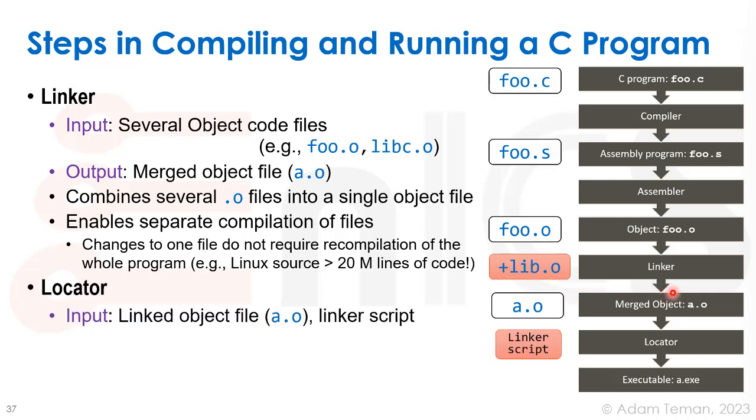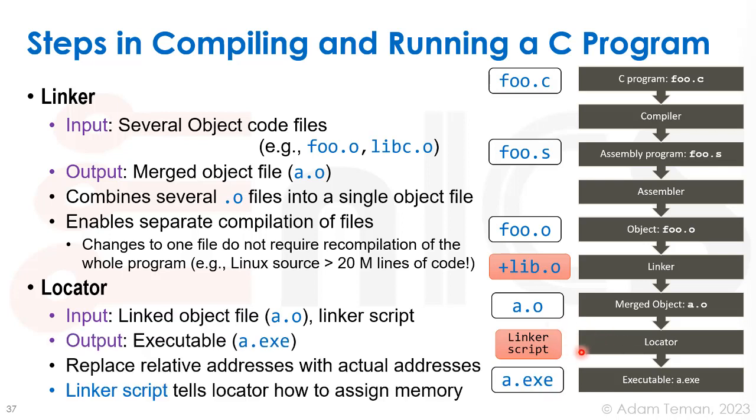Once we have the linked file, we need to locate or relocate all the data. Inside the a.o file, we have relative addresses or labels. A linker script tells us about the memory space and how it's allocated in our specific machine. Then the locator replaces those relative addresses with real addresses, and we can produce a binary executable to load into memory and run.